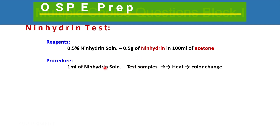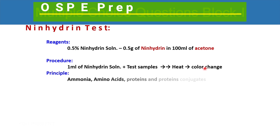After taking 1 ml of the ninhydrin solution and 1 ml of the test sample, you will heat the mixture and then observe the color change. When performing the ninhydrin test, ninhydrin dissolved in acetone will be provided along with the test sample, which may contain amino acids, peptides, peptones, or egg albumin. You take 1 ml of the test sample and 1 ml of ninhydrin, heat it, and observe the color change.